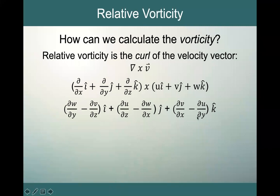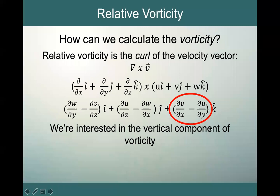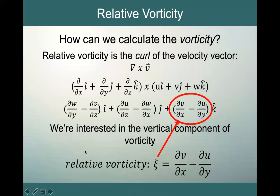What we're really interested in is what that paddle wheel is going to do, and the only thing that affects it is the vertical component of our vorticity. The vertical component is what we define as our relative vorticity, given the symbol zeta (ζ), which equals ∂v/∂x − ∂u/∂y. The change in u in the y direction gave us the turning of the paddle wheel, and a change in v in the x direction also gives a velocity shear and relative vorticity.